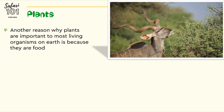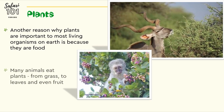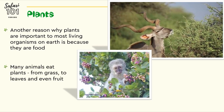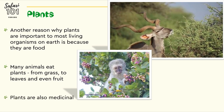Another reason plants are important to most living organisms on Earth is because they are food. A lot of animals eat plants, from grass to leaves and even fruit. Us humans also eat fruit and plants — for example, think about corn and wheat that we can make bread with. Plants are also used in some medicines.